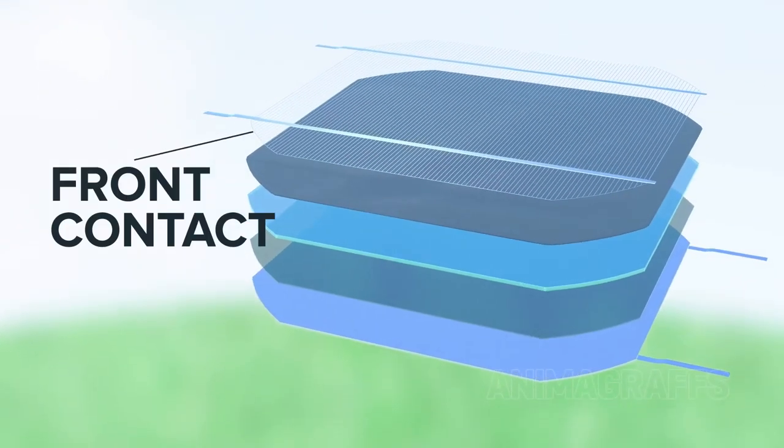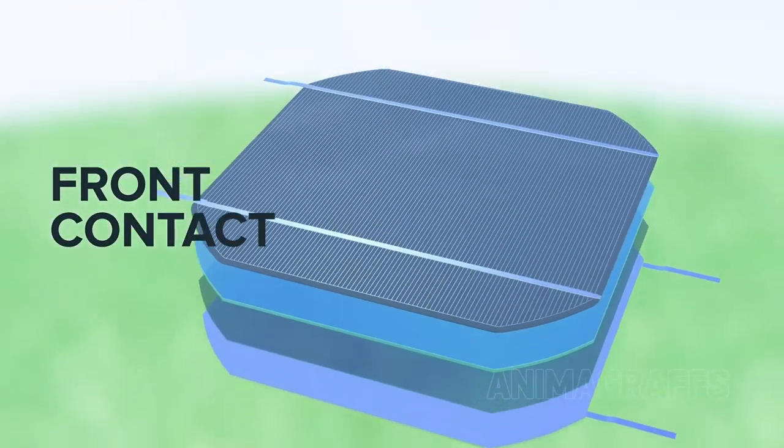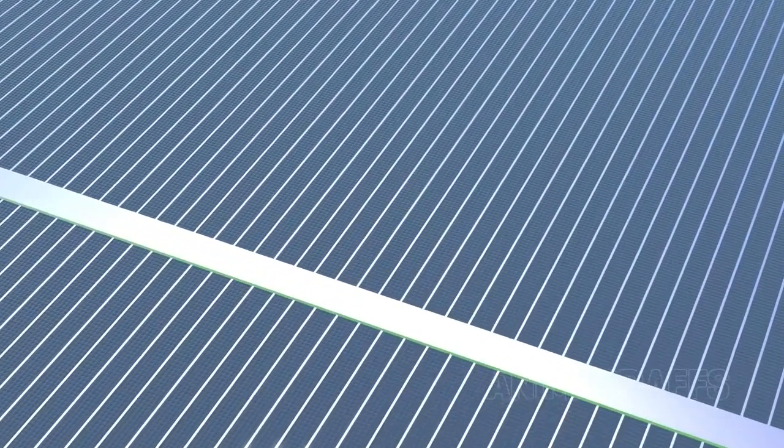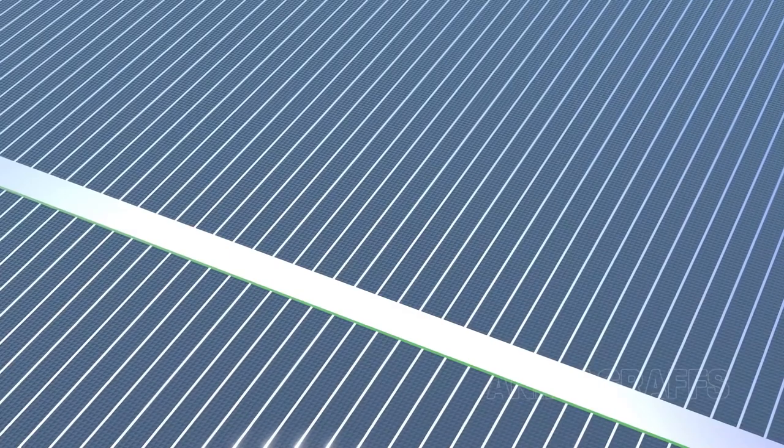Front contact. Metallic fingers are screen-printed and bonded to the top of the cell. They're designed for optimal charge collection, but minimal shading.